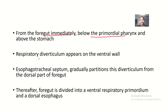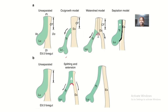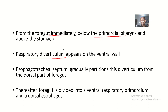The respiratory diverticulum appears on the ventral or anterior wall of the foregut. This is also called the laryngotracheal diverticulum or laryngotracheal tube. It appears in front of the esophagus. The esophagotracheal septum then gradually partitions this respiratory diverticulum from the dorsal parts of the foregut, creating separation between the two structures.